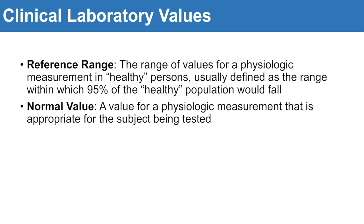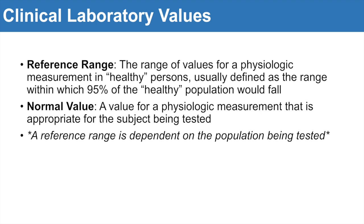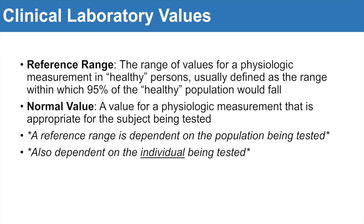A normal value is a value for a physiologic measurement that is appropriate for the subject being tested. This means that patients themselves have certain factors or indicators that actually alter or affect their value and their reference range. So a reference range is dependent on the population being tested, but also dependent on the individual being tested.